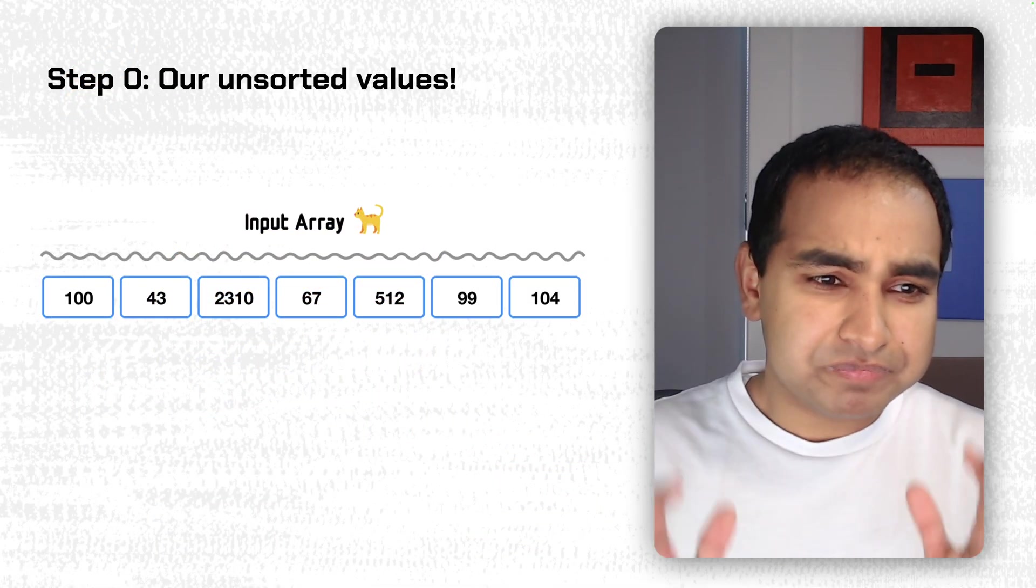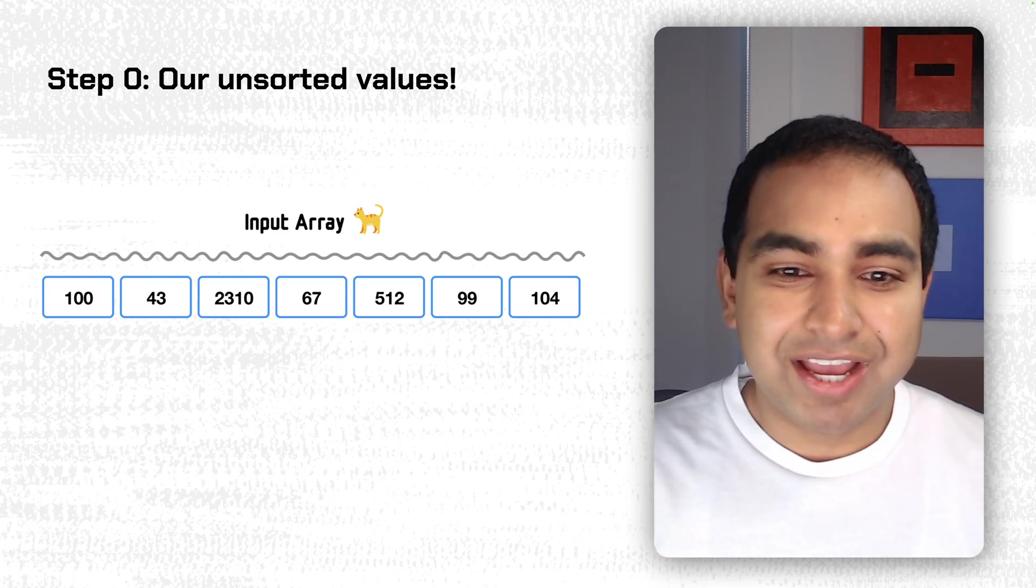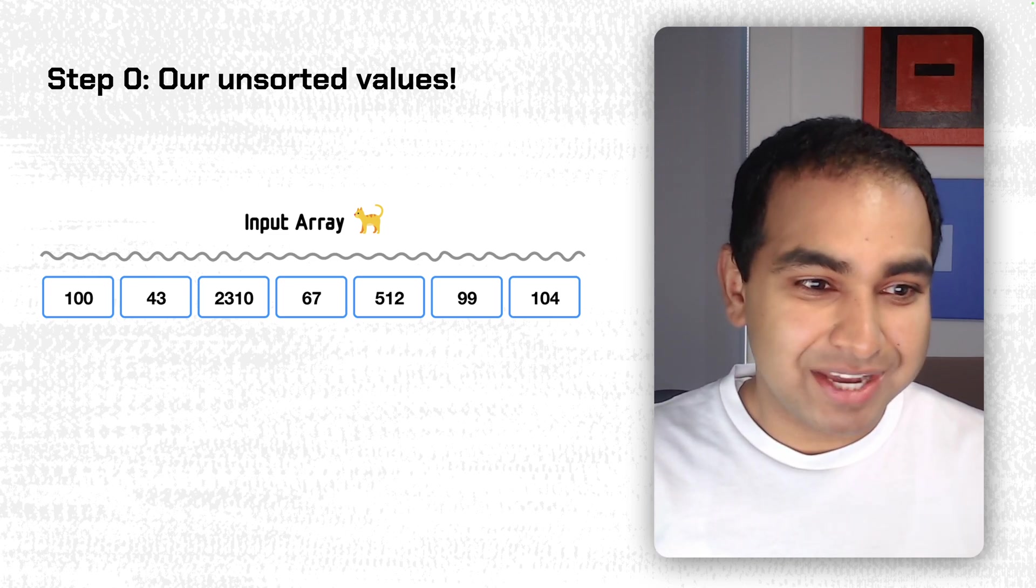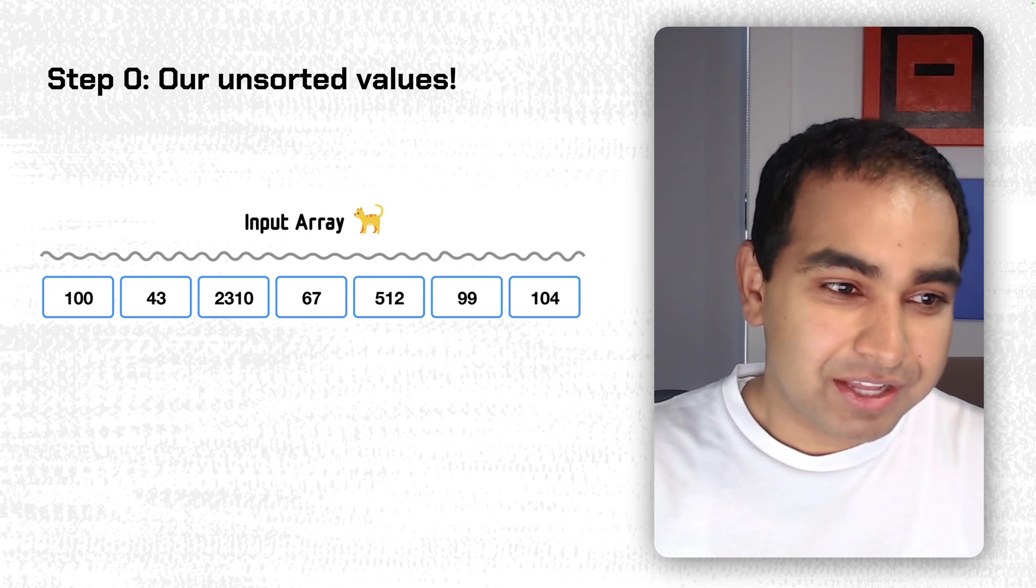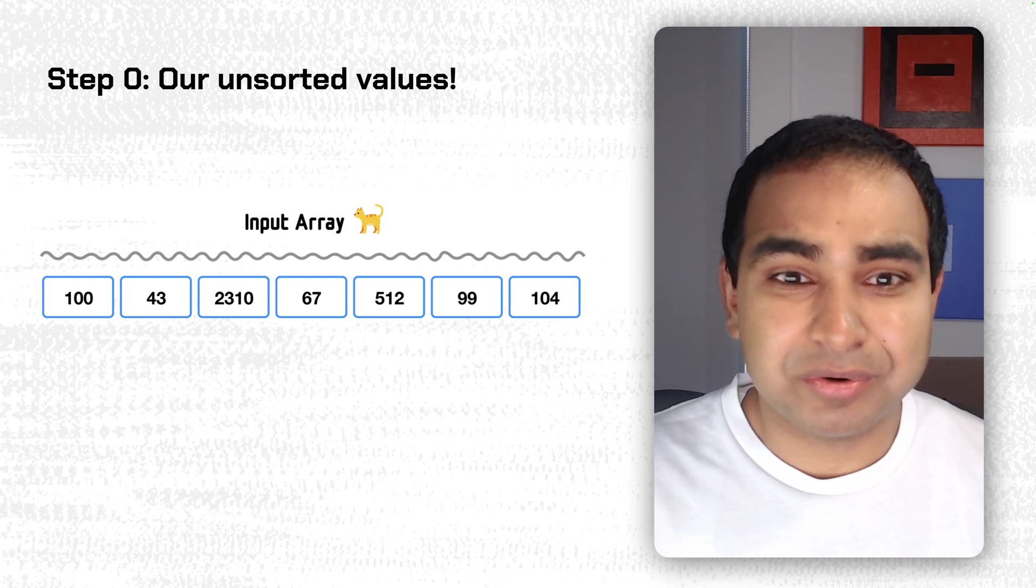Now, getting back to what we're doing here. To understand how RadixSort works, let's start with an example. Here, I have our input array. It has about seven numbers: 100, 43, 2310, 67, 512, 99, 104. Unsorted numbers, all positive integers, and let's see how we can use RadixSort to sort them.